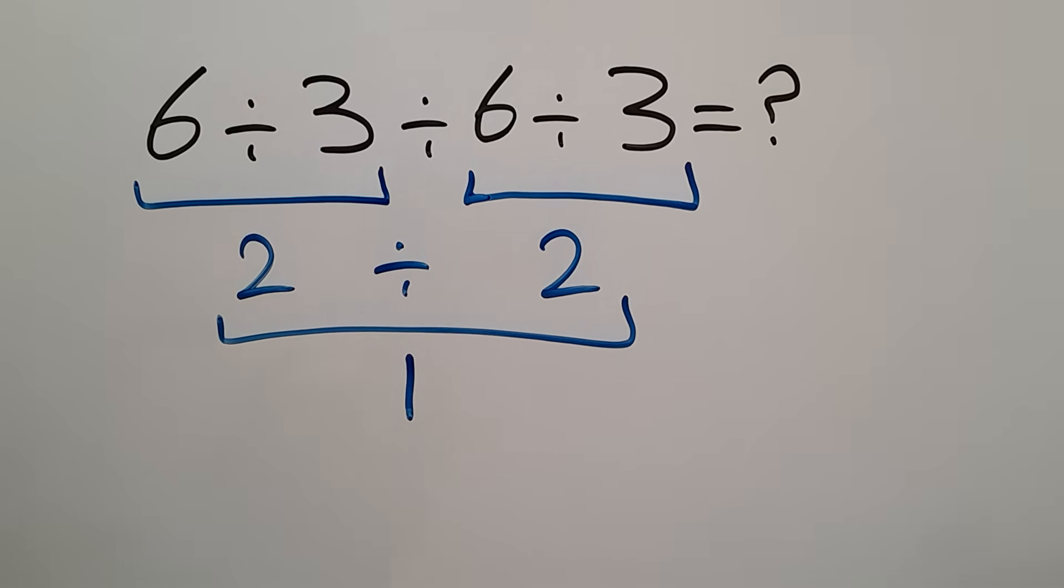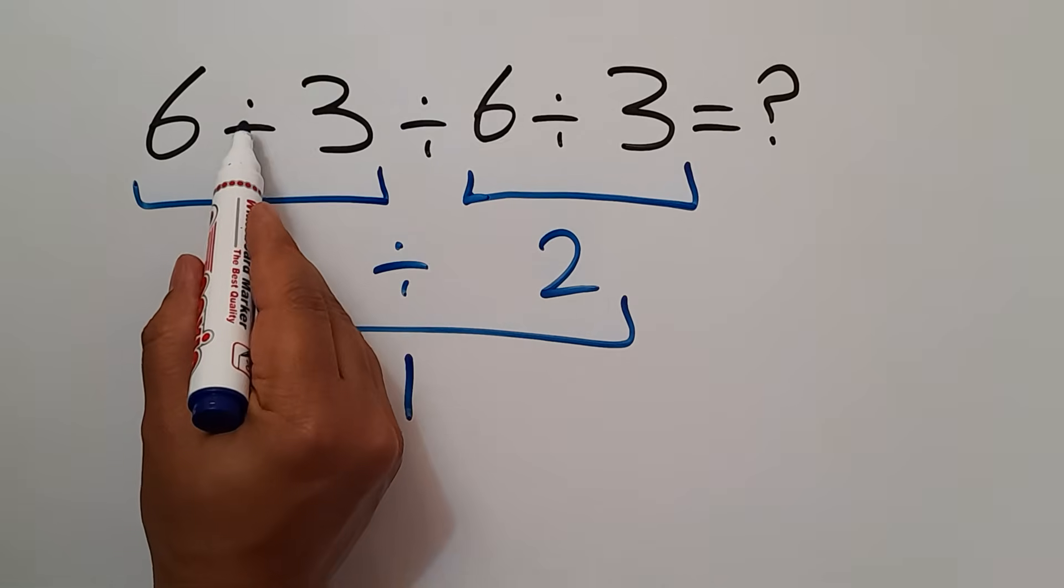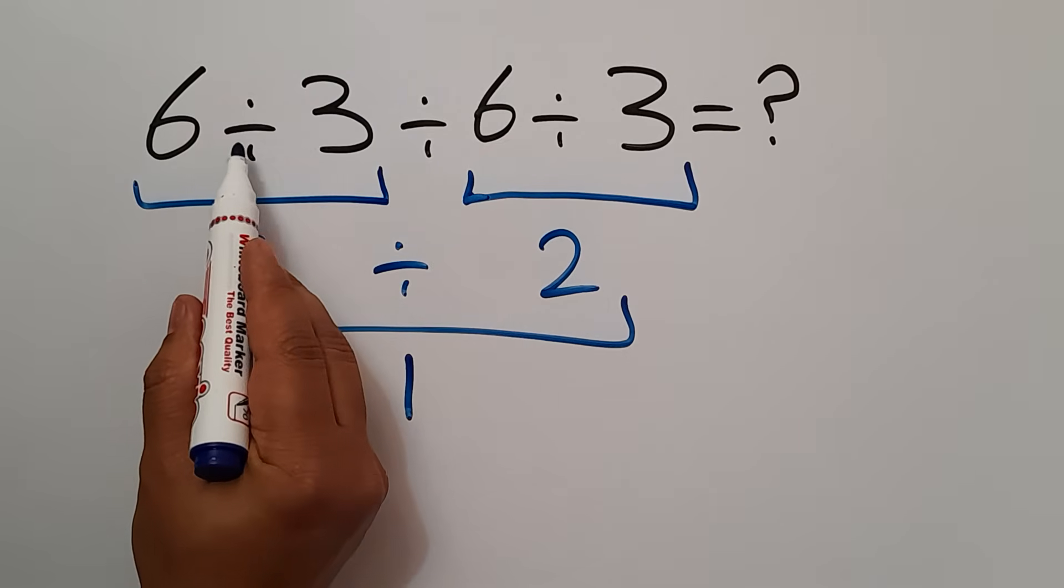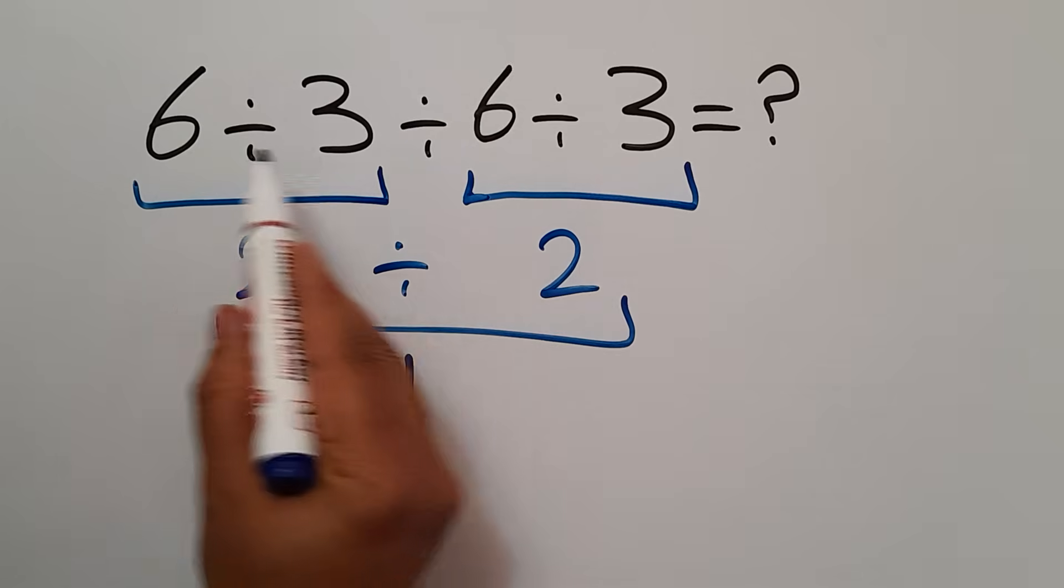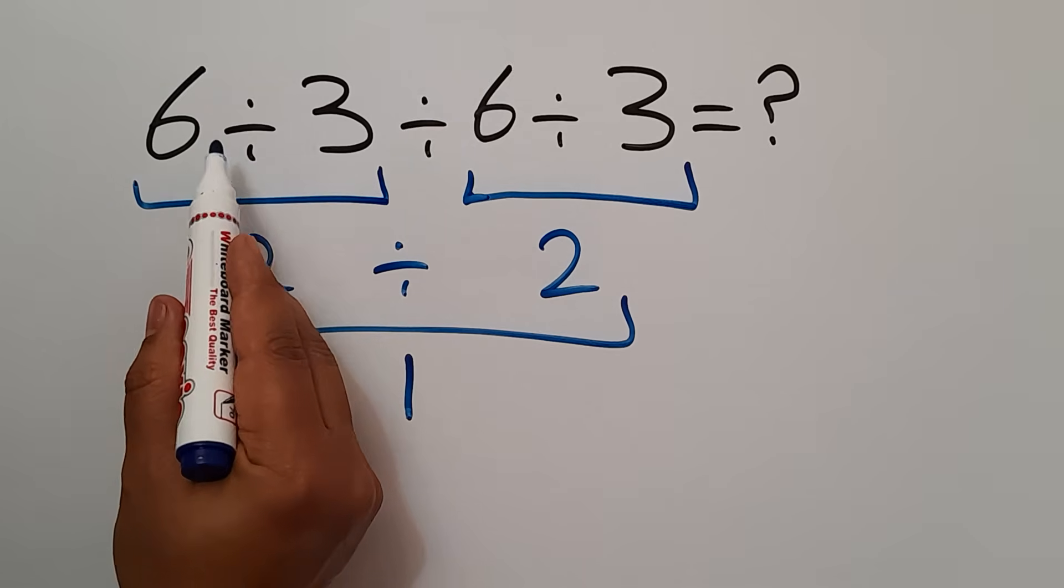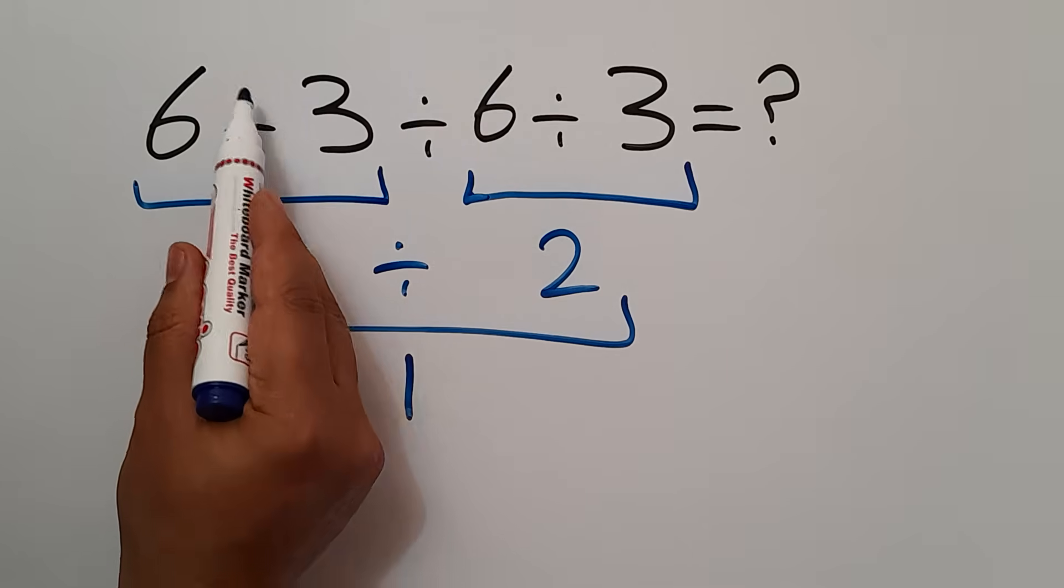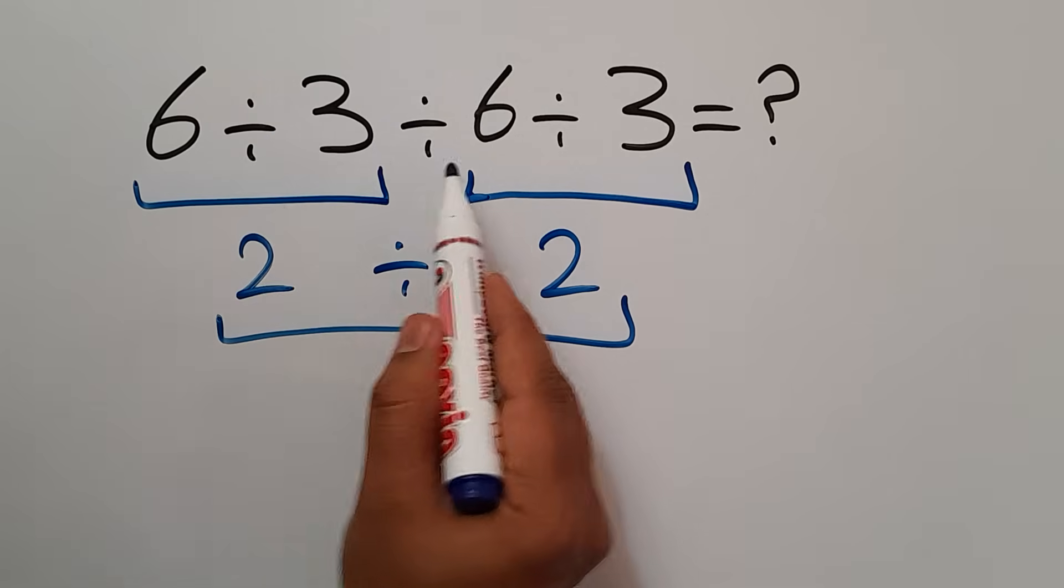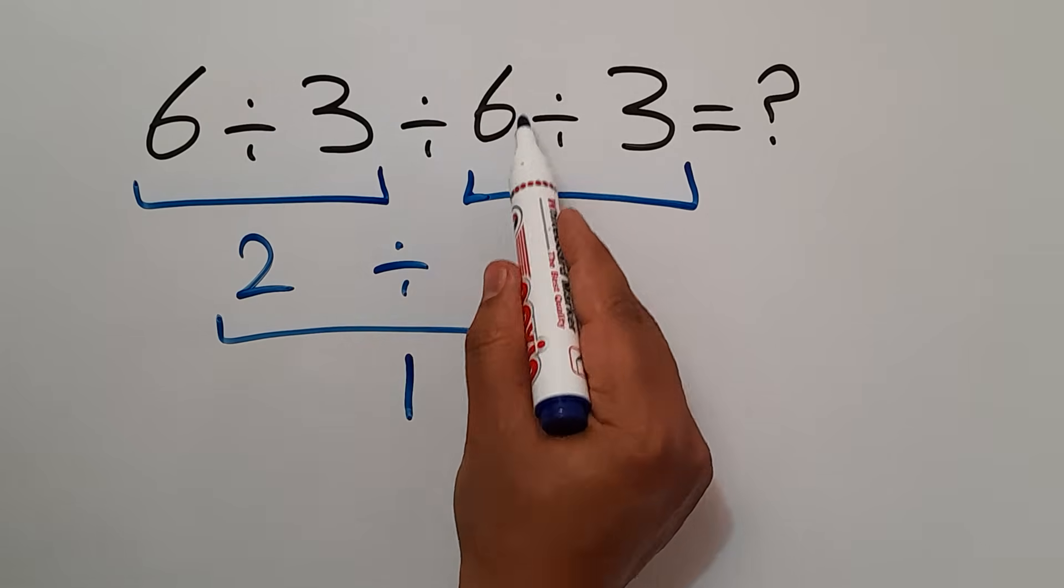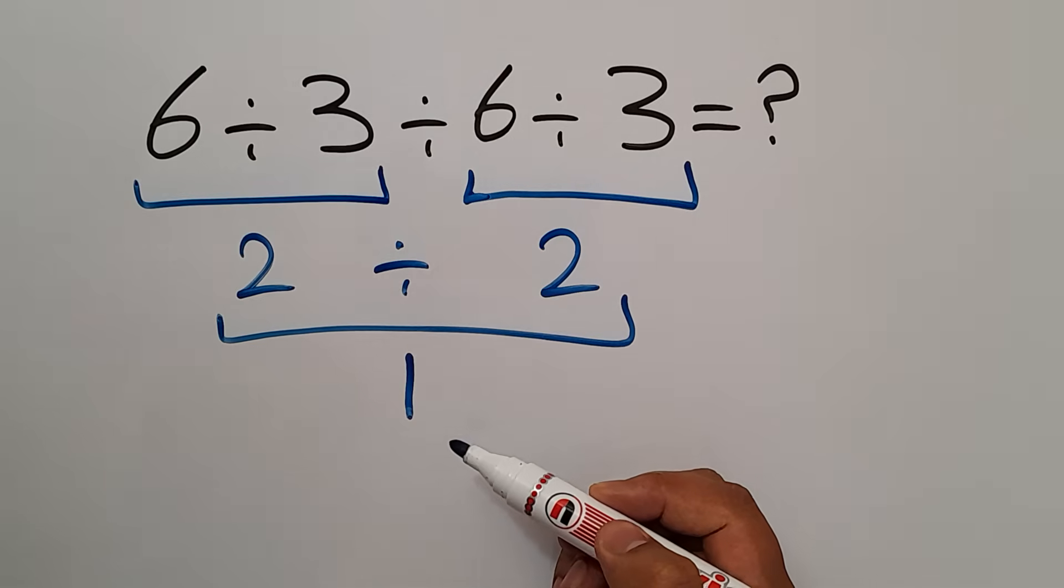Because according to the order of operations, when we have more than one division in one expression, we have to go from left to right. So we have to do this division, then this division, and finally this division.